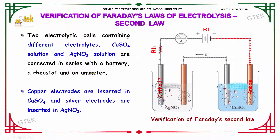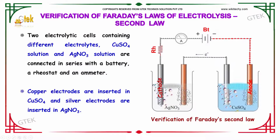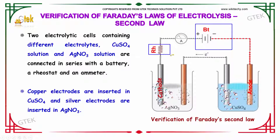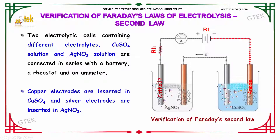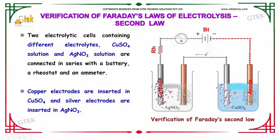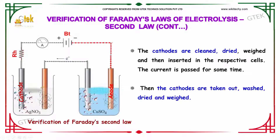For the second law, we have two electrolytic cells containing different electrolytes — silver nitrate and copper sulfate — connected in series with a battery BT, a rheostat, and an ammeter. The copper electrode is inserted into the copper sulfate and the silver electrode is inserted into the silver nitrate. The cathodes are cleaned, dried, weighed, and then inserted in their respective cells.